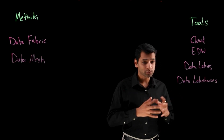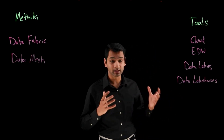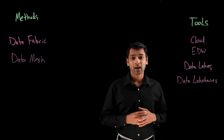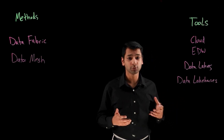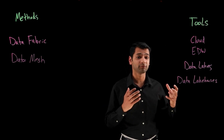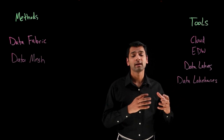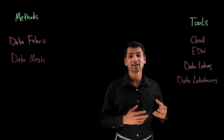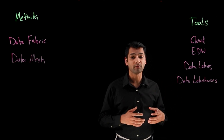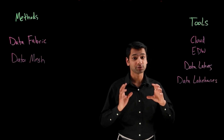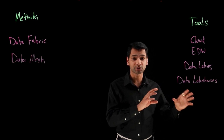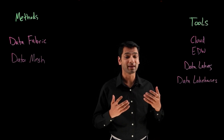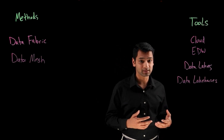The last tool I want to touch on is the data lake house. It's a combination of the two and has emerged over the past few years. It combines the flexibility in types of data and the ability to scale of a data lake with the more organized and high-quality data components of a data warehouse. This allows you to keep running critical operational data workloads while starting to explore new analytical and machine learning use cases.